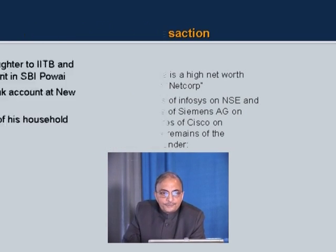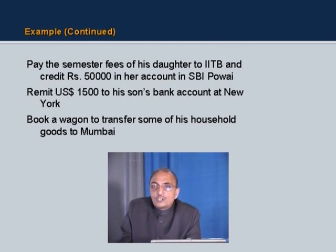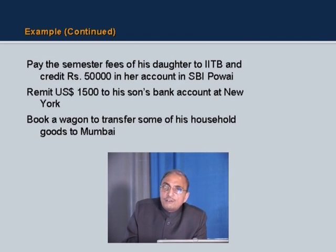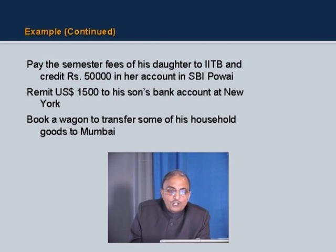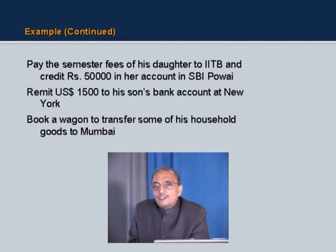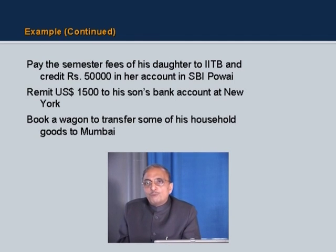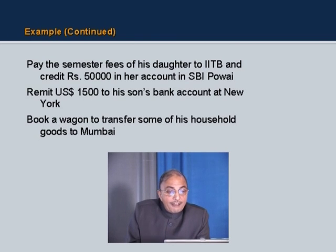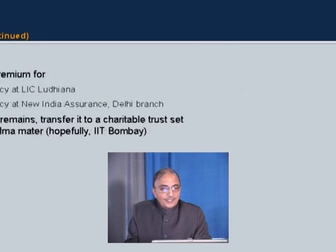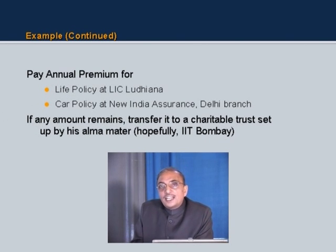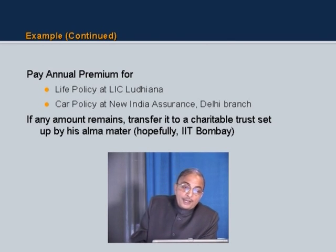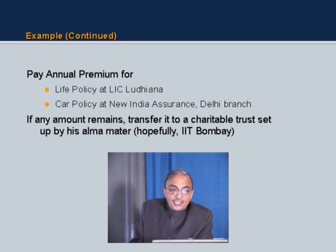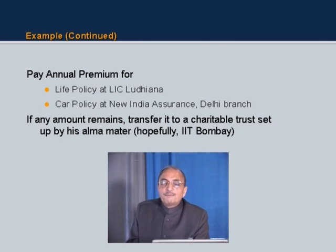He wants to credit 50,000 rupees to his daughter's account in State Bank of India (she studies at IIT Bombay), transfer $1,500 to his son's bank account in New York, book a wagon to transfer household goods to Mumbai, pay the annual premium for a life policy at LIC Ludhiana, pay a car policy premium for New India Assurance in Delhi, and transfer any remaining amount to a charitable trust at his alma mater IIT Bombay. High net-worth individuals have done these kinds of things for ages — but as separate transactions. Anandip Singh Pannu is asking you to do all of this as a single transaction.